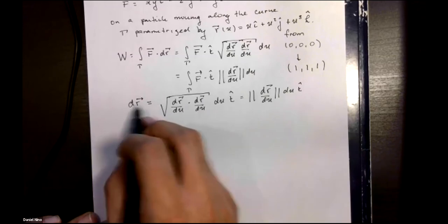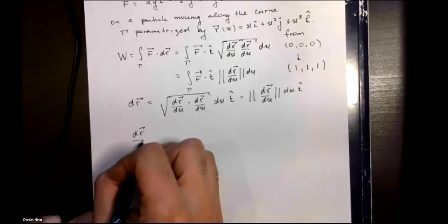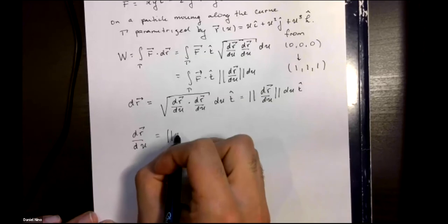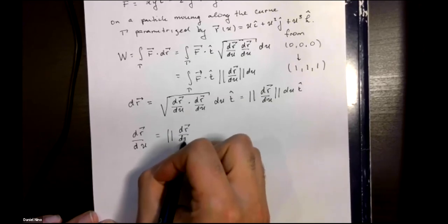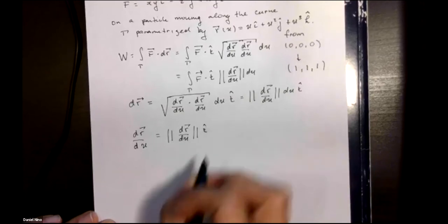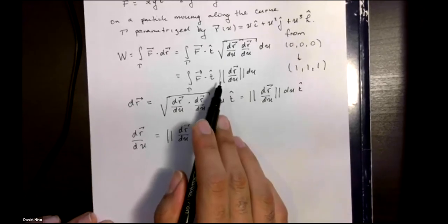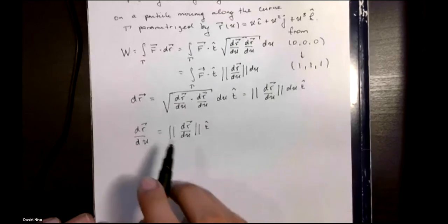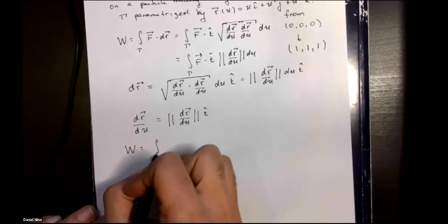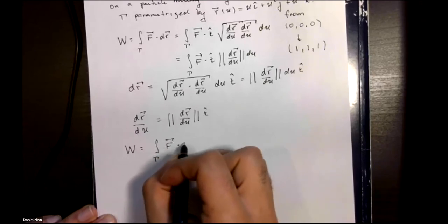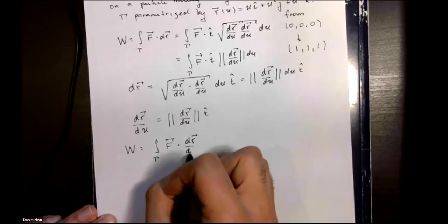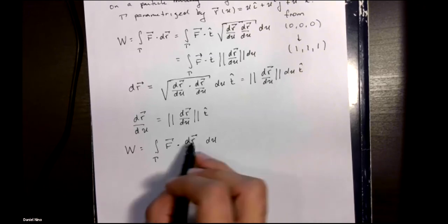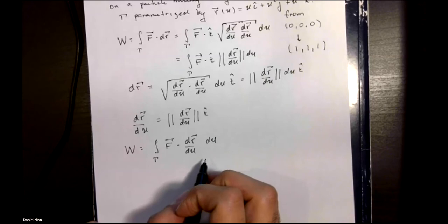This means that we can bring the du over to this side and we're left with this expression. So we can go back over here, replace this t hat norm of dr over du by this expression. That means that the work is equal to F dot dr/du integrated over du, and instead of canceling these out we're going to use this form in this example to calculate the work.